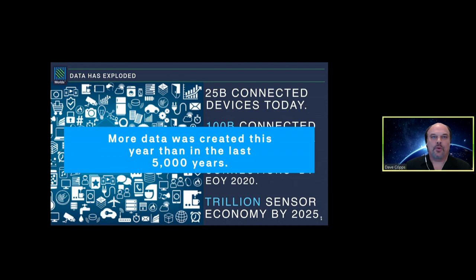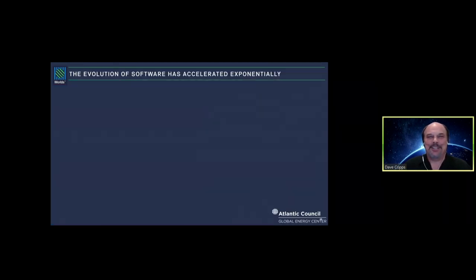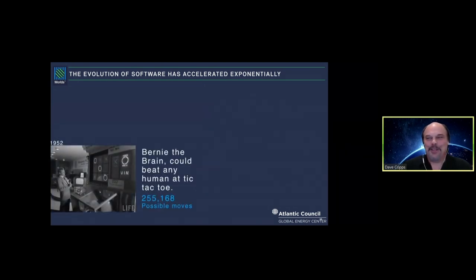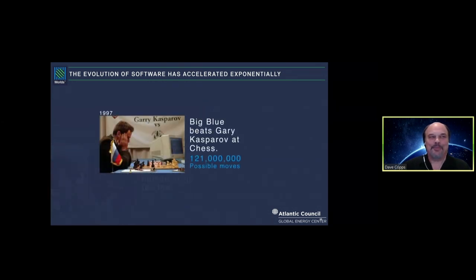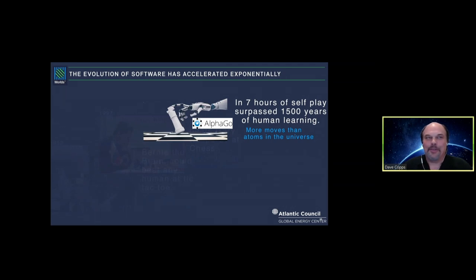The most amazing thing in this evolution is the software. Back in 1952, Bernie the Brain could beat a human at tic-tac-toe with about 255,000 possible moves. In 1997 we all heard about Deep Blue beating Kasparov with 121 million possible moves. Then it gets really interesting: Google's AlphaGo played the game Go, which is the most complex board game in the world and has more possible moves than there are atoms in the universe. AlphaGo beat Lee Sedol, the world's greatest Go player. But the real departure here is that rather than learning from data, it played itself in the game for four hours. Four hours of gameplay in AlphaGo exceeded 1500 years of human knowledge.